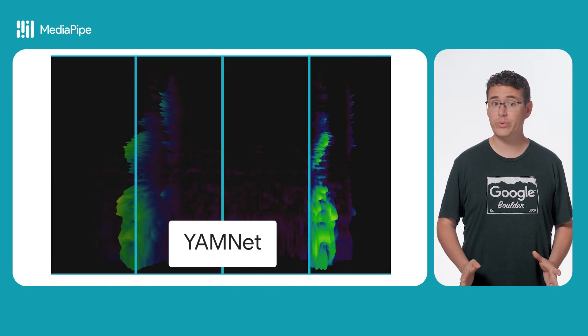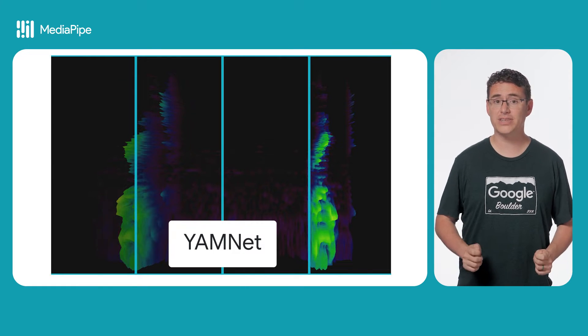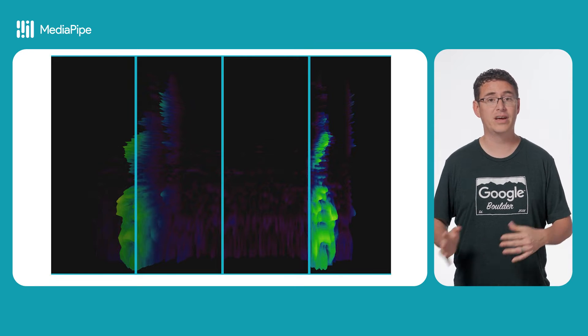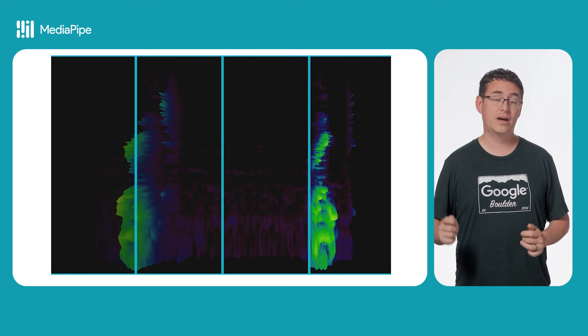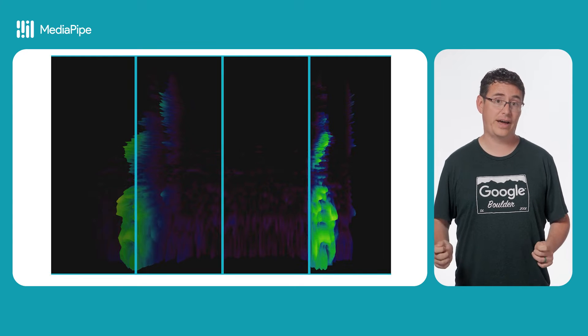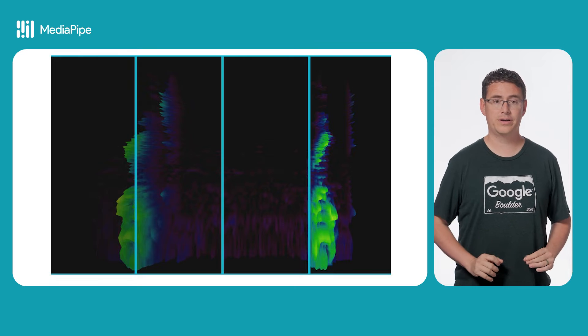Now that you have a better understanding of how to represent audio data in a visual way, let's think about how a generic audio classification model would approach the problem. The model we will use in this video is called YamNet and it attempts to classify audio in segments that are 0.975 seconds in length. As audio comes in, it will accept a segment, attempt to classify it, return the result, and then move on to the next segment that has been recorded.